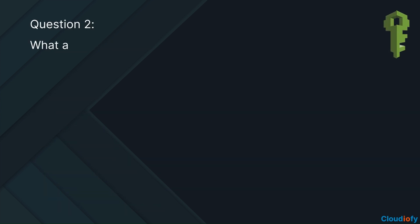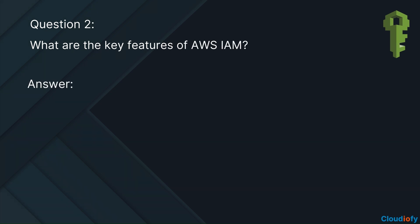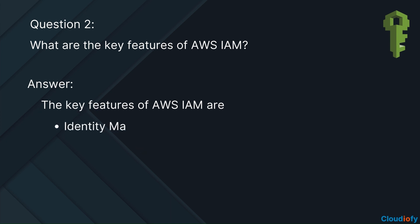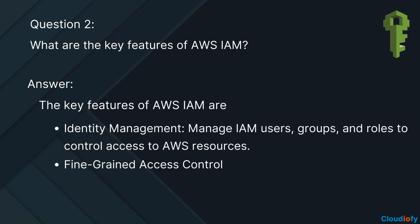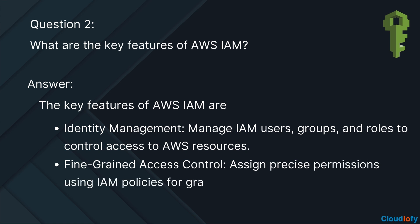What are the key features of AWS IAM? The key features of AWS IAM are: identity management — manage IAM users, groups, and roles to control access to AWS resources. Fine-grained access control — assign precise permissions using IAM policies for granular control over resource access.